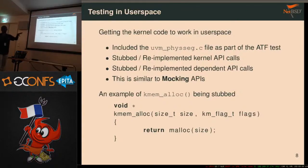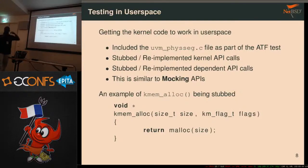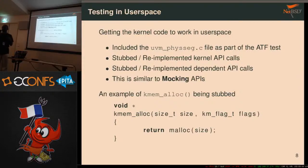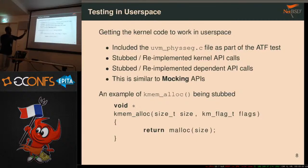In that process, you have to export a subset of the kernel API to userland. Rump does this by namespace rehashing, but this is much simpler. This code doesn't really use a lot of API infrastructure. Essentially it was kmem_alloc being stubbed by malloc, things like that. So it's fairly straightforward.